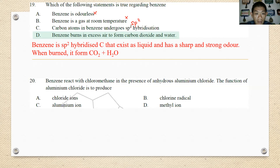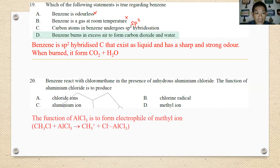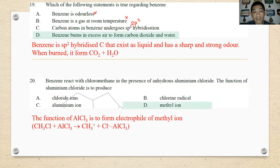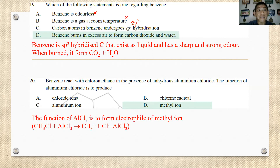Number twenty: benzene reacts with chloromethane in the presence of aluminium chloride. The function of aluminium chloride is to generate the electrophile — specifically the methyl carbocation. CH3Cl plus AlCl3 forms the methyl ion. That is why aluminium chloride acts as a catalyst.